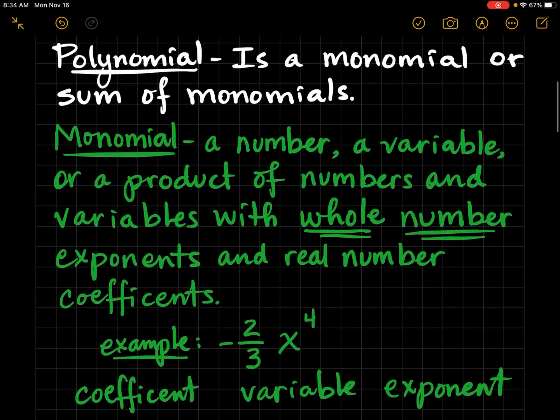Monomial is a number, a variable, or a product of numbers and variables with whole number exponents and real number coefficients.